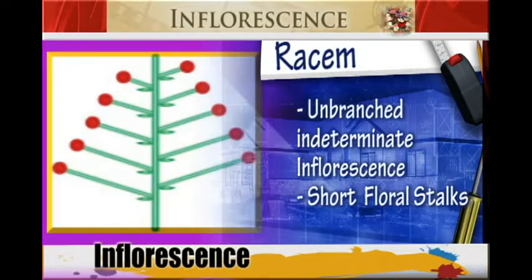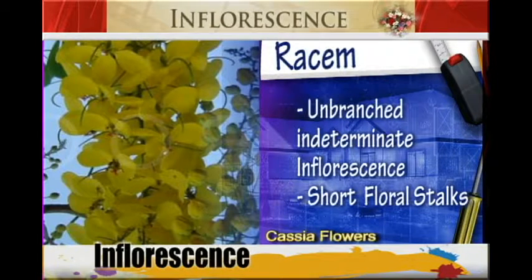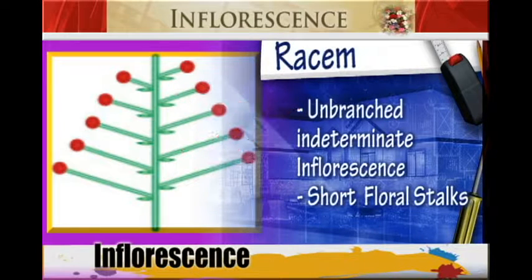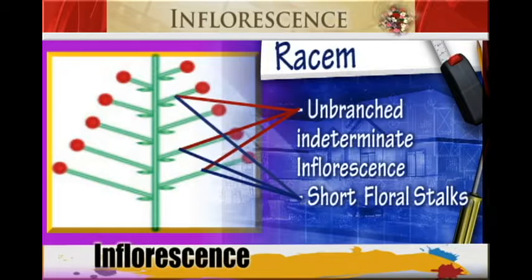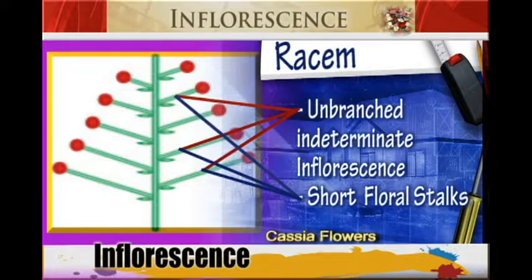One of them is the Raceme inflorescence. It is one where there is unbranched indeterminate inflorescence. They have short flower stalks, or they are pedicellate. The Raceme type can be found in Acacia.